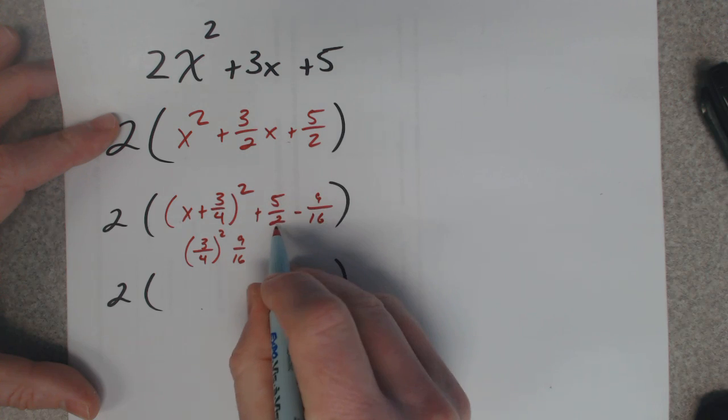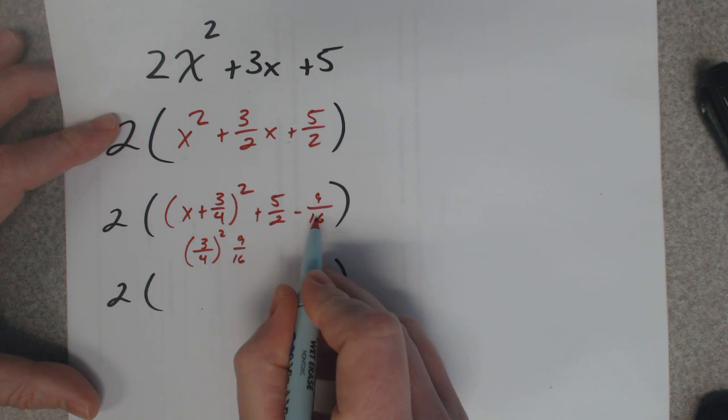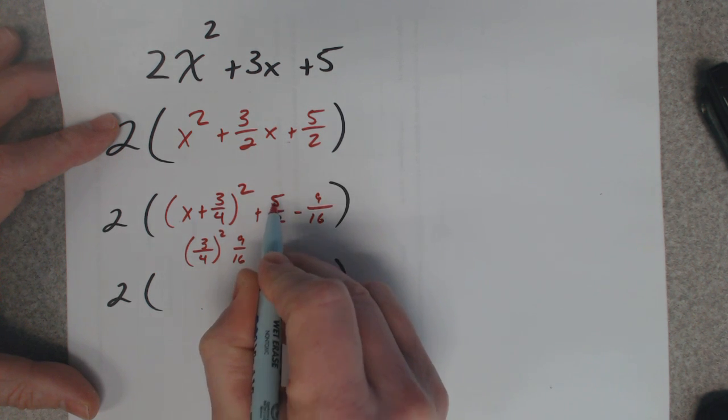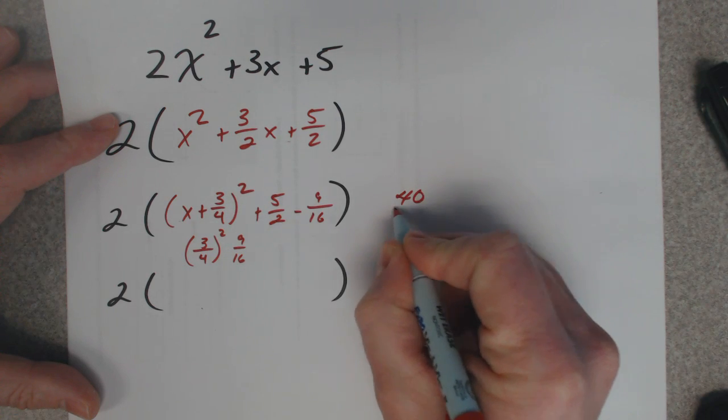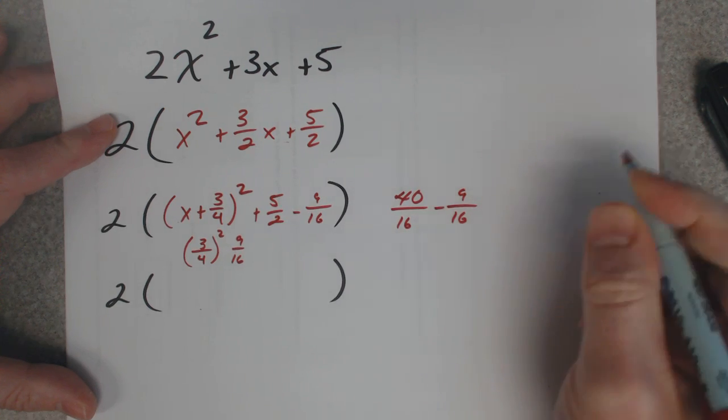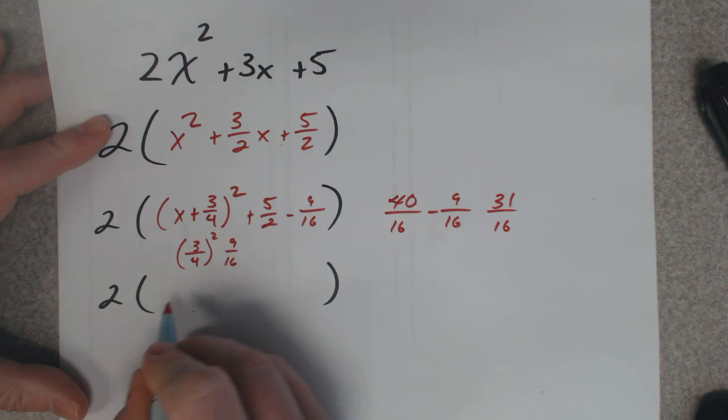Now I need to figure out what this value is. 5 halves – to make this a 16, when I subtract fractions I have to make sure I have the same denominator. So this needs to be 16, multiply it by 8, so multiply the top by 8 and you'd have 40 over 16 minus 9 over 16. When I subtract those two values, I'd have 31 over 16.